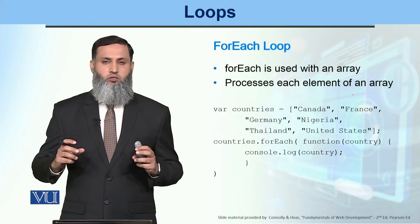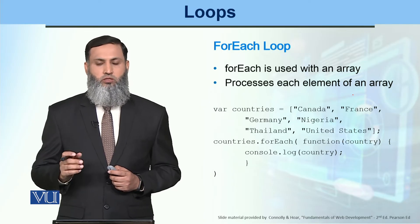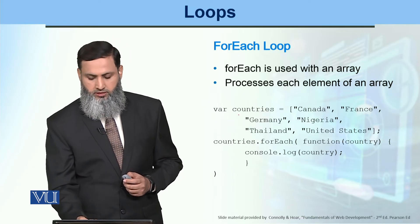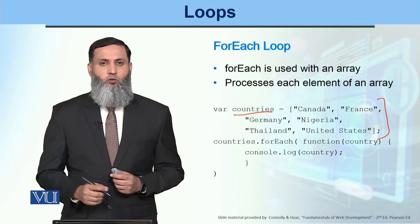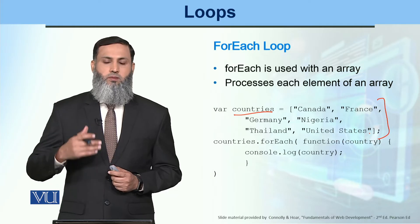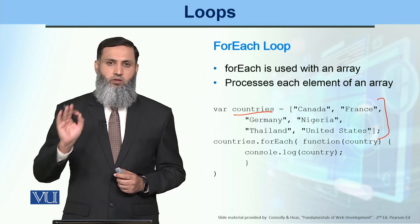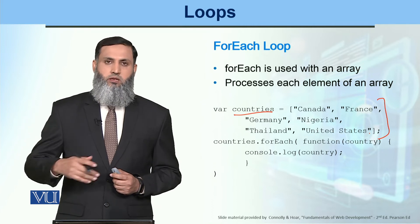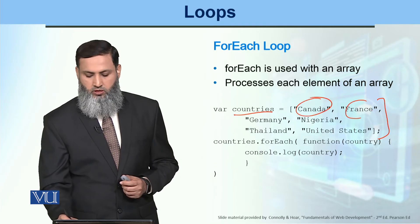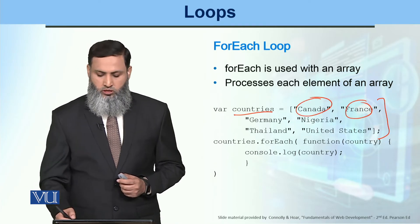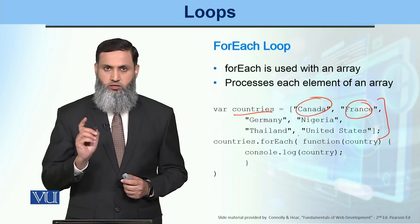We use for-each as a programming construct. In JavaScript, we use for-each with arrays. For example, let's say we have an array of countries. We want that when the loop executes, in each iteration we get one country by one and then perform some action on it — first Canada, then France, then Germany, and so on. For this we use countries.forEach().